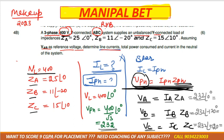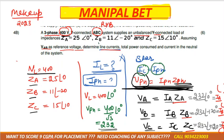Now we calculate IA, IB, and IC. We substitute ZA, ZB, and ZC into the respective equations. After substituting, we get the values of IA, IB, and IC. In a star connection, the line current equals the phase current, so these are the different line currents. This completes the first part.